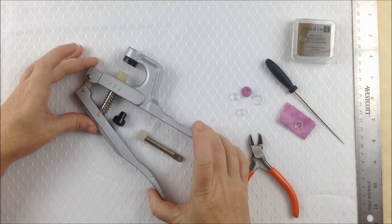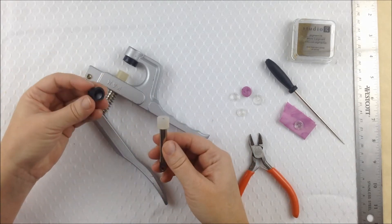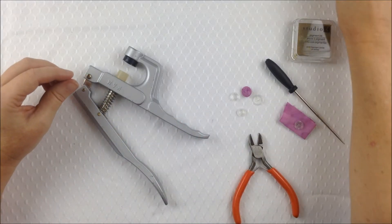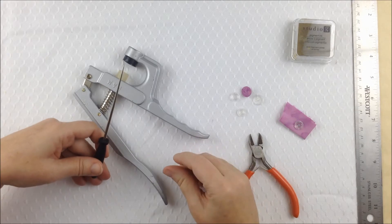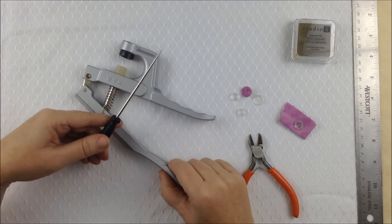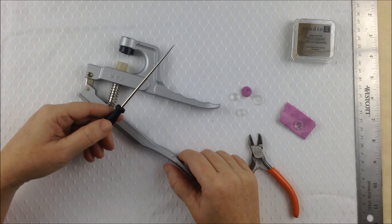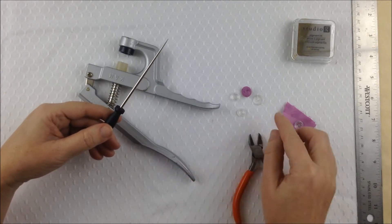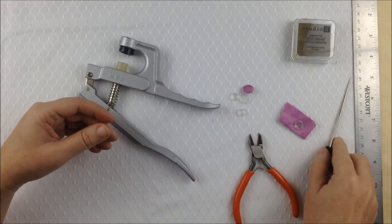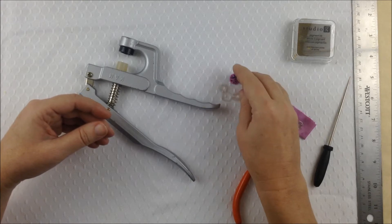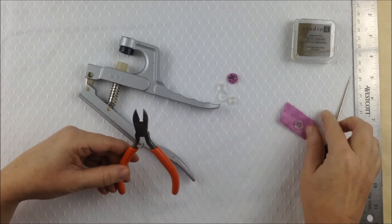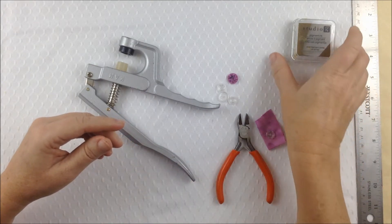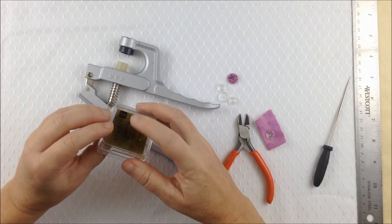So to get started you'll need your cam snap pliers. Just make sure that you've got the correct size die attached to it but refer to your instructions on how to do that. You'll also need a pointed tool of some sort. This one came with the plier kit. If you don't have one of these just use something like a blunt needle just to push a hole in the fabric so that the post can go through it. And of course you'll need the four parts of the cam snap. And to avoid this you'll also need a pair of side cutters. As an optional thing also some pigment ink.